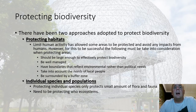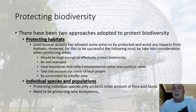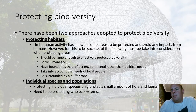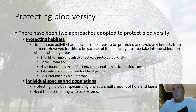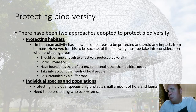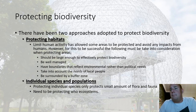To protect biodiversity there are two approaches. The first is to limit human activity. However, for this to be effective, several things must be considered: protected areas should be large enough to effectively protect biodiversity, well managed, and have boundaries that reflect environmental rather than political needs. For instance, on the Central Coast the NSW and Australian federal governments manage ecosystems differently, so boundaries need to reflect ecosystems rather than political borders. Local people must also be taken into account, and protected areas need to be surrounded by a buffer zone.